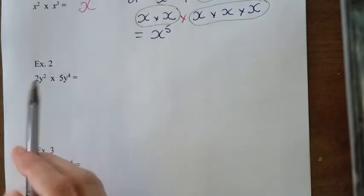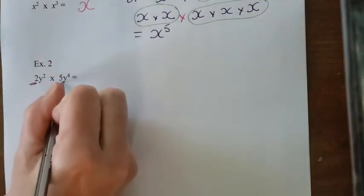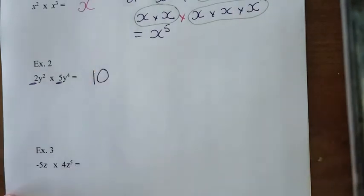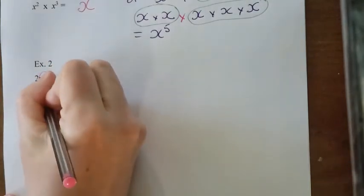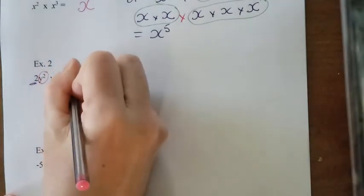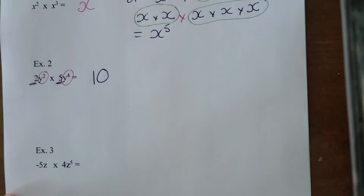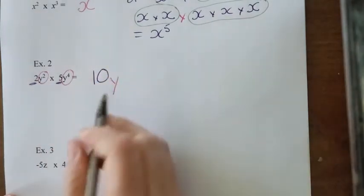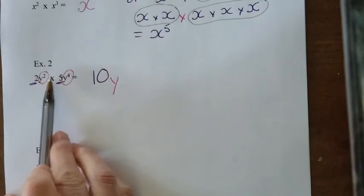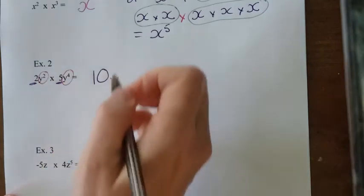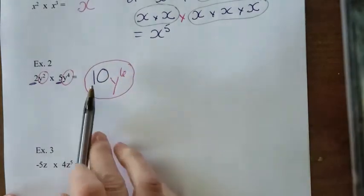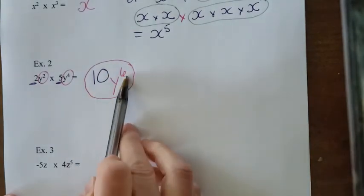We just multiply the numbers together. So we have 2 times 5. Well, 2 times 5 is simply 10. You write down 10. Now we're going to deal with the exponent part. I have y squared times y to the power of 4. The base is the y, so I write down y, and I add the exponents. So 2 plus 4 is 6. So my answer is simply 10y to the power of 6.